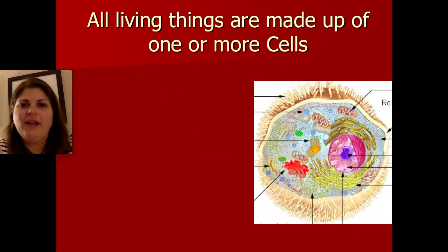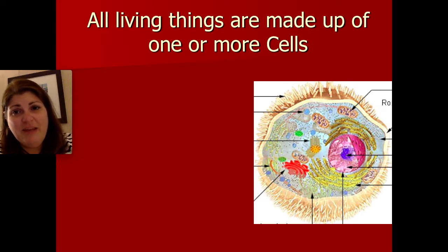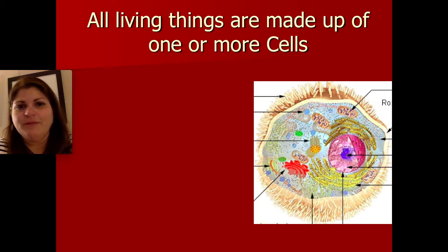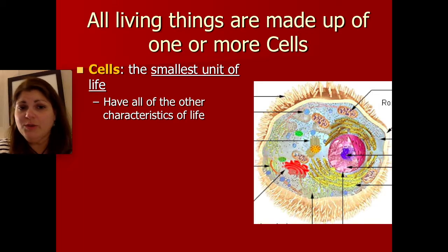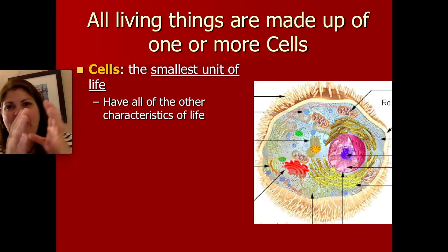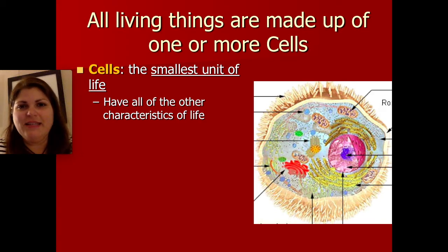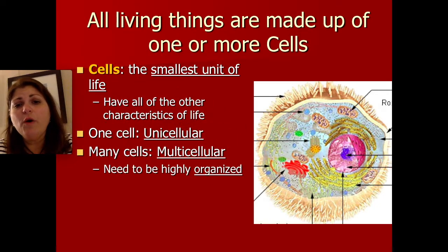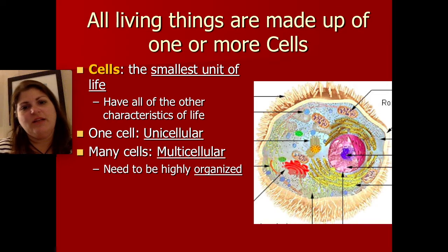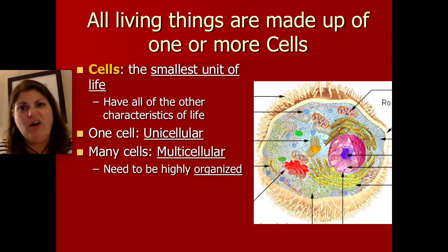Our last characteristic of life is the thing that is truly unique to life: all living things are made up of cells. There is nothing made up of a cell that wasn't once alive or still alive. Cells are the smallest unit of life — meaning cells are capable of doing all of the other characteristics of life. A cell can grow, develop, has DNA, can maintain homeostasis, and has a metabolism. One single cell can even be an organism. Organisms made of multiple cells have a lot of complexity in order to make those cells work with one another, requiring great organization.